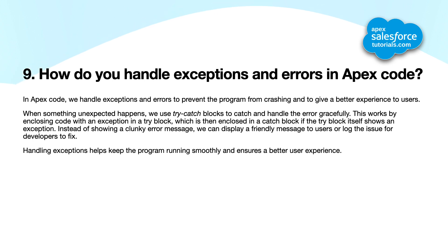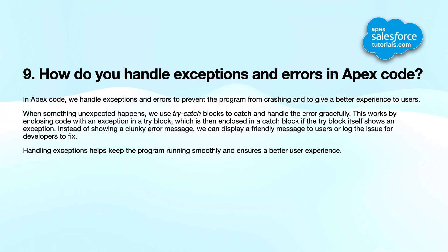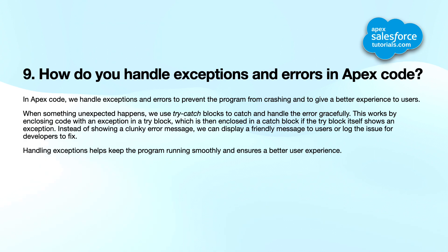Ninth question: how do you handle exceptions and errors in Apex code? We use try-catch blocks to catch and handle errors gracefully. Code that may throw an exception is enclosed in a try block, and if an exception occurs, the catch block handles it. Instead of showing a clunky error message, we can display a friendly message to users or log the issue for developers to fix, keeping the program running smoothly.